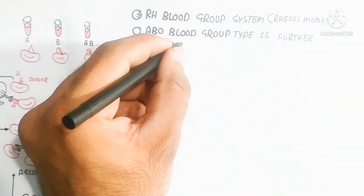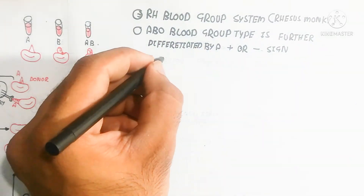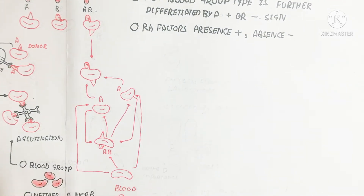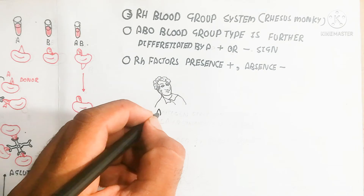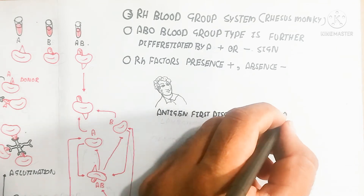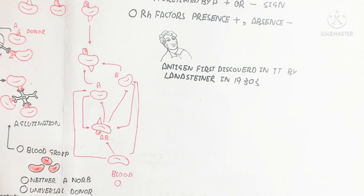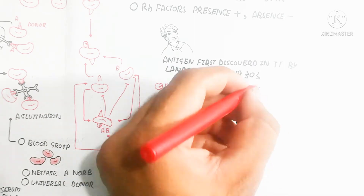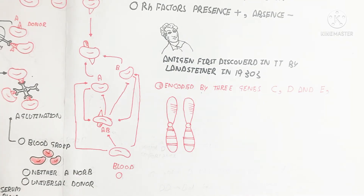Next we will discuss the Rh blood group system. The ABO blood group type is further differentiated by a positive or negative sign. The presence of Rh factor is known as positive, and its absence is negative. The antigen was first discovered by Landsteiner in 1940. It is encoded by three genes — C, D, and E — which are present on the same homologous chromosome.